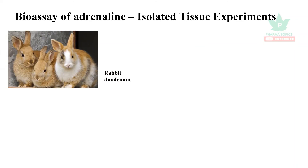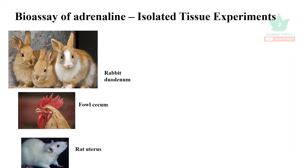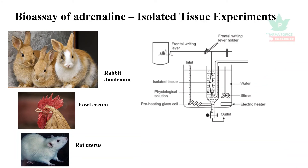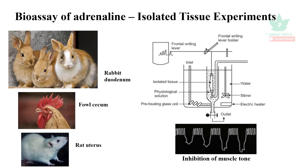For the isolated tissue experiments, rabbit duodenum, cecum of the fowl, and rat uterus are used. Kymograph drum recordings are used to record the relaxation of the isolated tissue. Since adrenaline relaxes the muscle, the curve points in the downward direction, indicating inhibition of muscle tone. The recordings for the standard and the test are compared and calculations are performed.